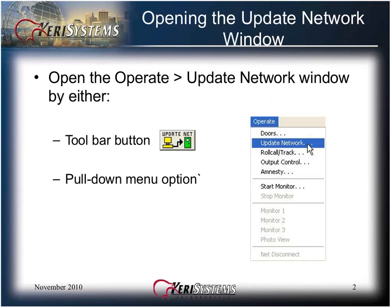Open the Operate Update Network window by either clicking on the toolbar button or from the Operate pull-down menu and select Update Network.